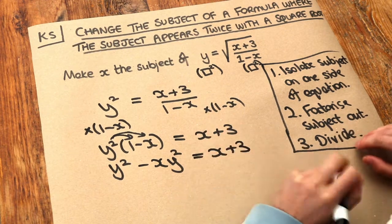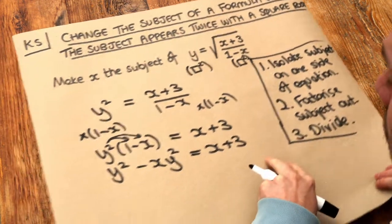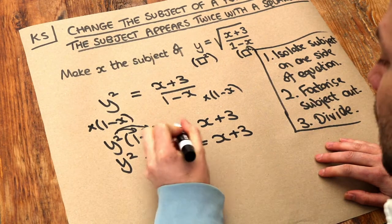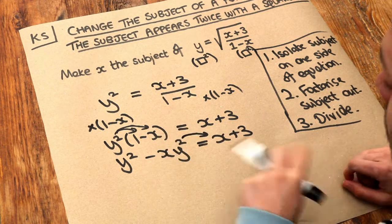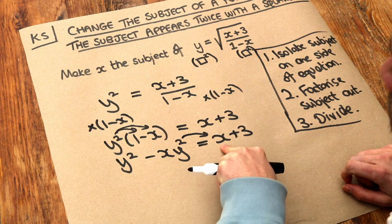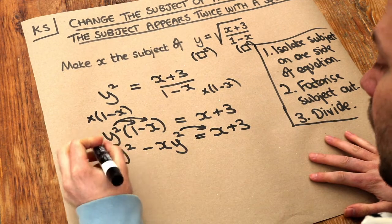And now we're ready to finalise step 1. So isolate the subject on one side of the equation. Now the x terms are currently on the left and right. We want to get them on one side. Let's get the x terms on the right hand side of the equation. Because if we were to add xy squared to both sides, then they would both be positive. And we prefer having positive terms than negative terms in our equation.